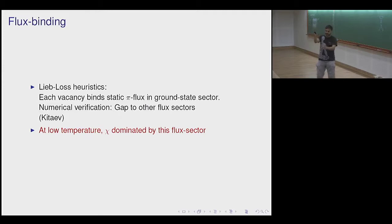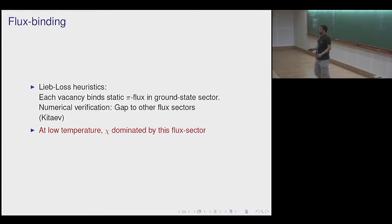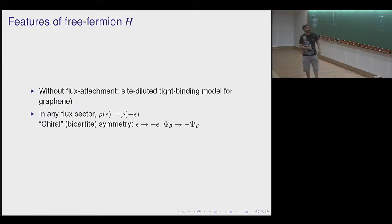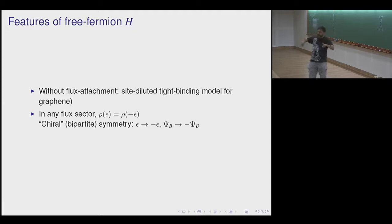For the flux sector: in a pure system with reflection symmetries, Lieb's theorem tells you every hexagon should have zero flux. With disorder there's no theorem, but the same heuristic seems to apply — to be in the ground state sector you put π-flux for every loop of length divisible by four and zero flux for loops of length divisible by two but not four. We go to that flux sector, take the low-temperature limit, and do the calculation. The disorder I consider is site dilution: non-magnetic impurities that correspond to missing orbitals in the tight-binding model.